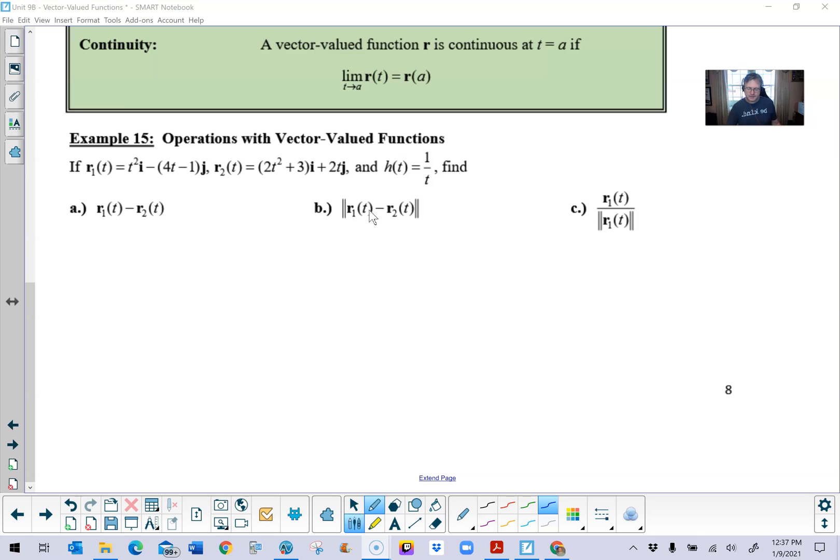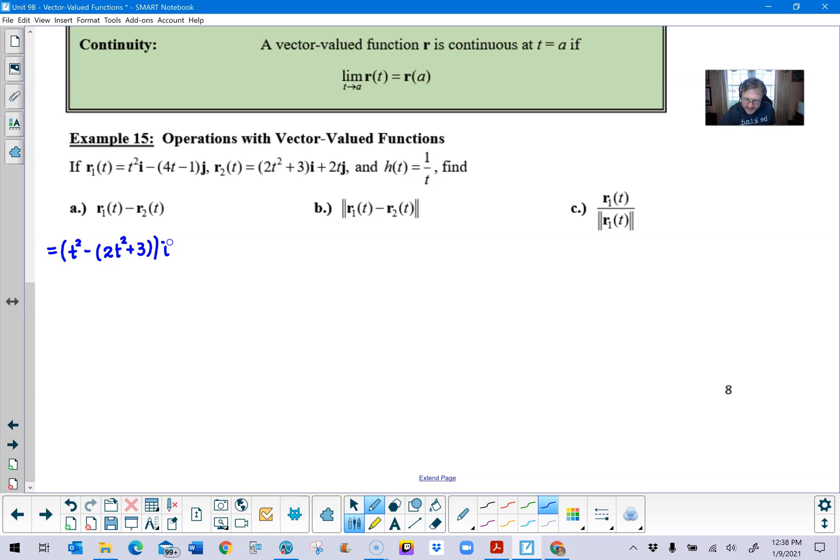In our example 15, you're given a couple of vectors and you're given a function h of t. So you've got r1 as a vector, r2 as a vector, and then our function h of t. Example a says to take vector r1 and subtract vector r2. Well, as we said, this is just a matter of taking the expression that you have for vector 1 in front of the i, which is t squared, and you would subtract whatever's in front of the i in the second vector, which in this case is the quantity 2t squared plus 3. All of that would be multiplied by our i.